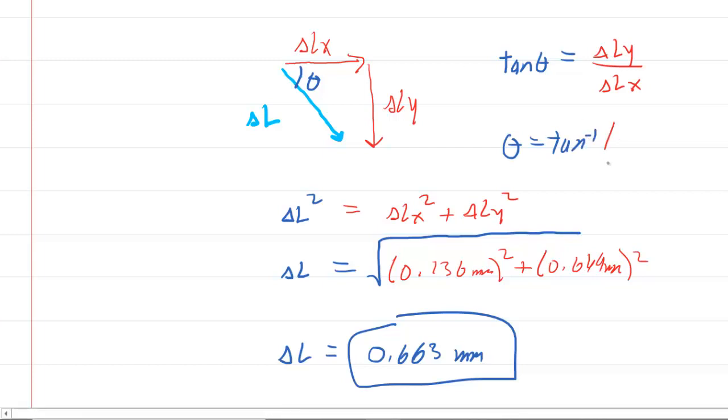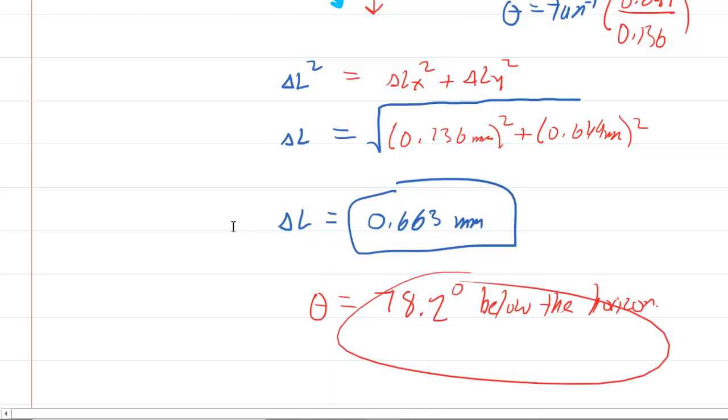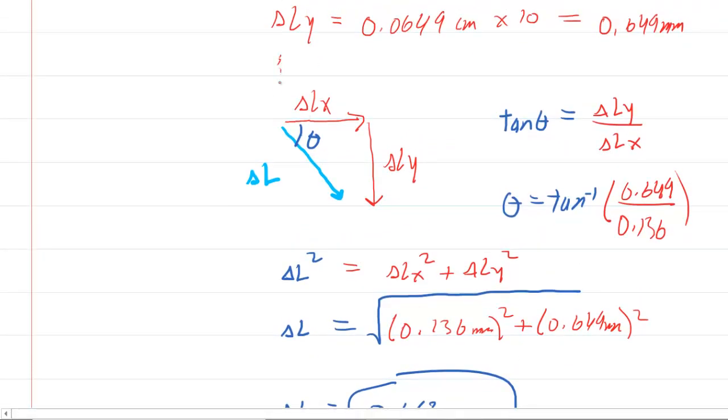So we're going to do the inverse tangent of the 0.649 millimeters over the 0.136 millimeters. You don't need to write down millimeters because they're going to cancel out anyways. When you do this and make sure that your calculator is set to degree mode, as mine was not. So we'll try it one more time. And we get 78.2 degrees approximately. So we'll just come down here and write that the angle was about 78.2 degrees. This is below the horizontal. If you're wondering why it's below the horizontal, just look back at the original picture. You can superimpose a little y-axis here and a little x-axis here. And we can clearly see that that angle is indeed below this horizontal line.